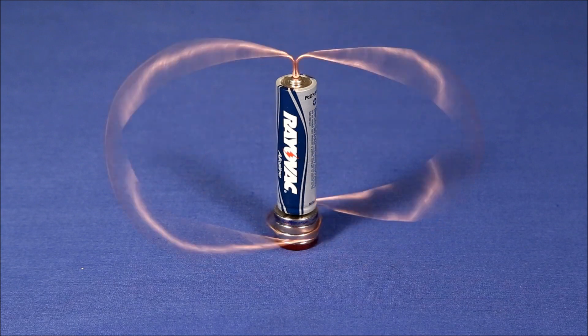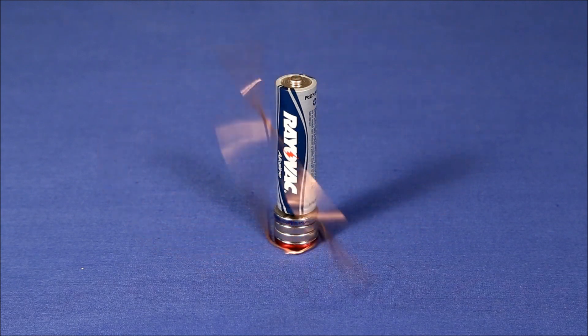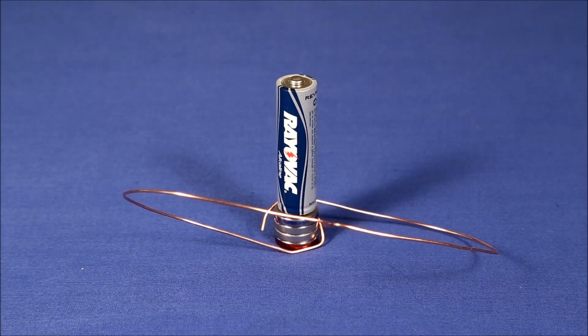Lightly tapping a dimple into the top electrode will keep the armature centered so it doesn't fall off like this.